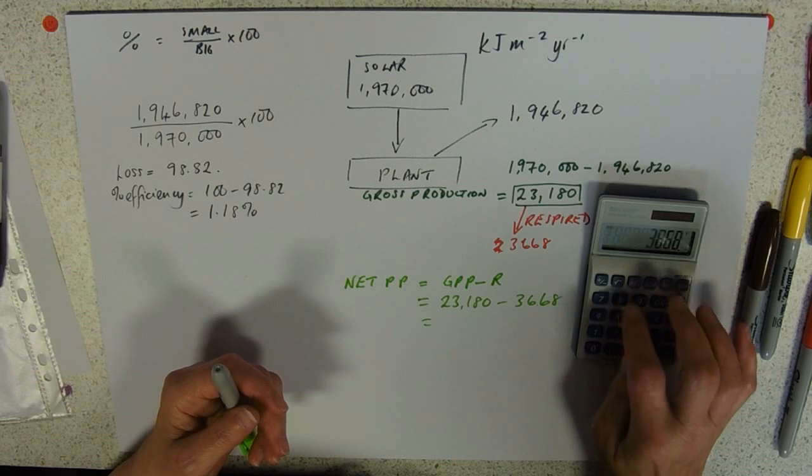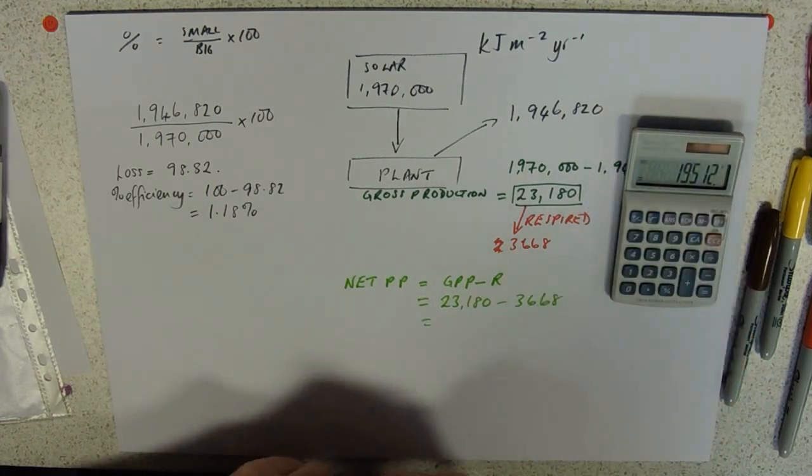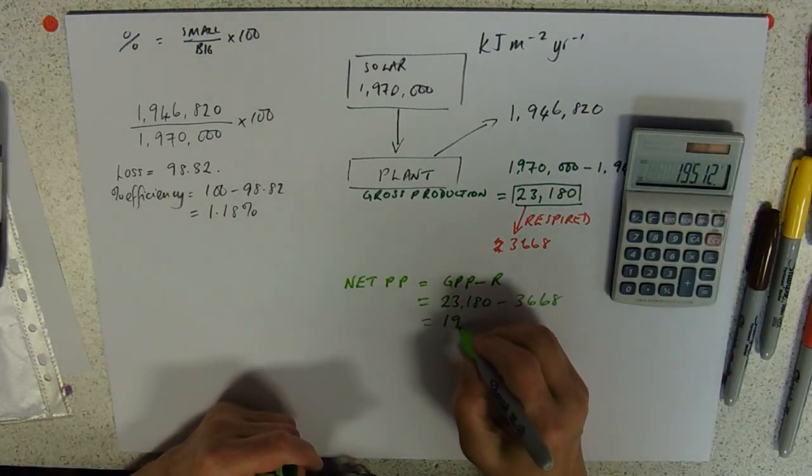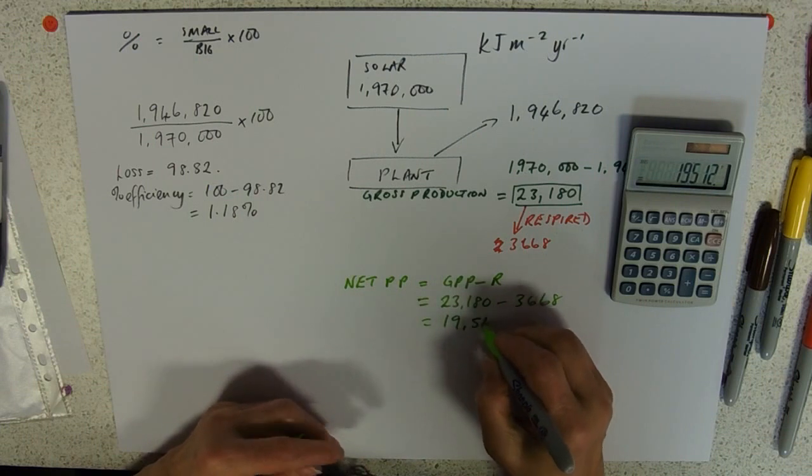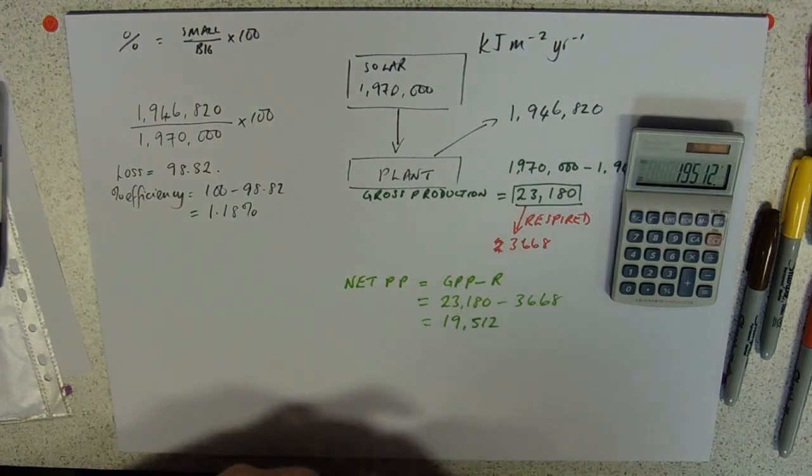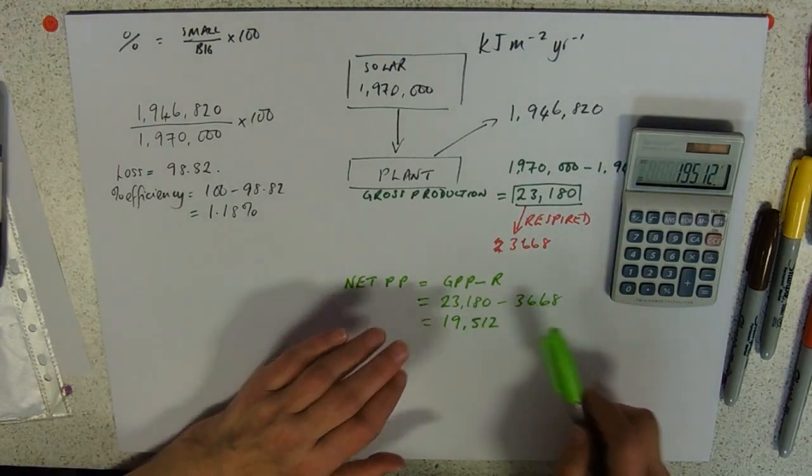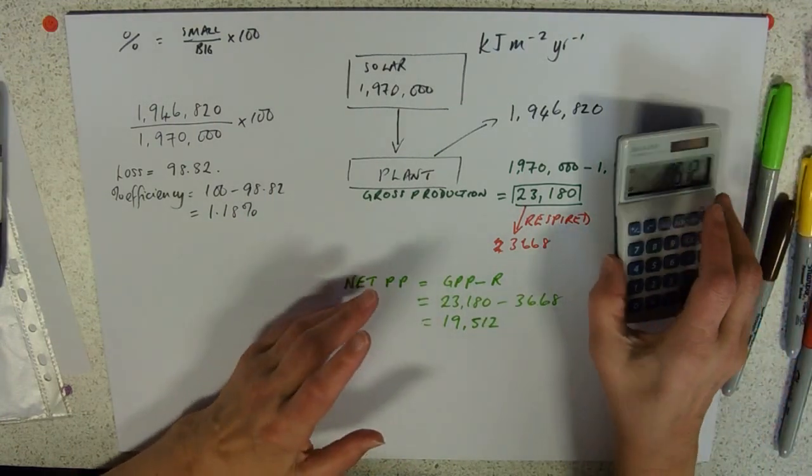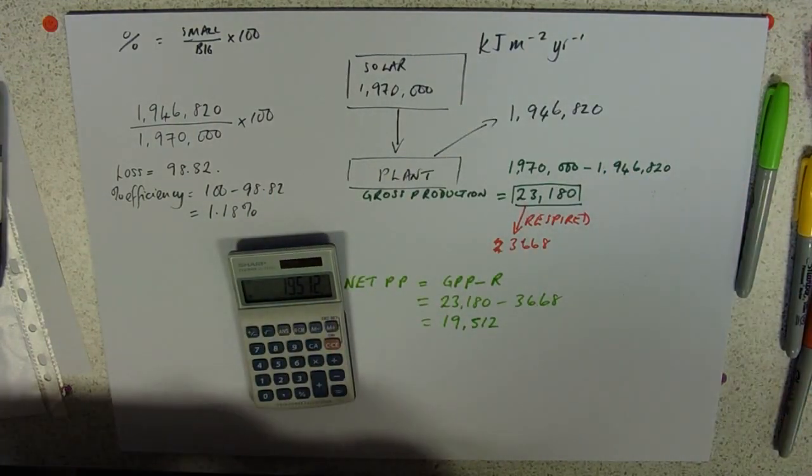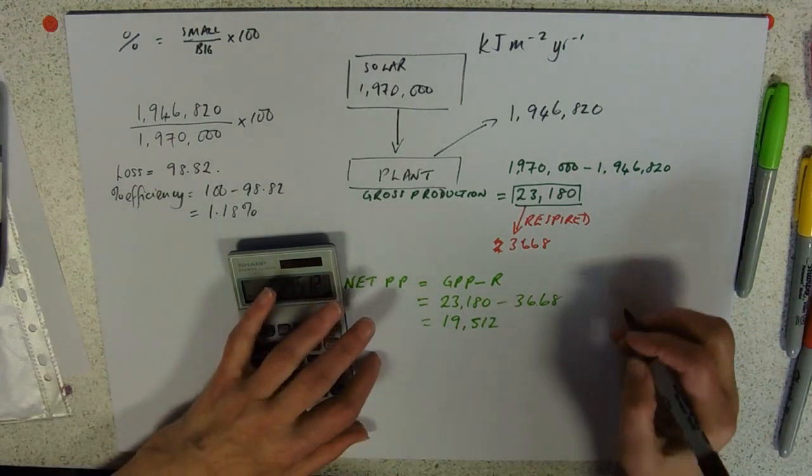This is nineteen thousand five hundred and twelve. Now obviously we could work out what the percentage of our gross production is. So the percentage of the gross production used in respiration.